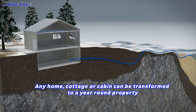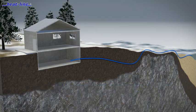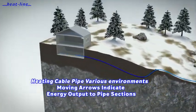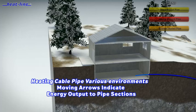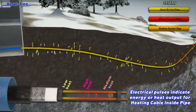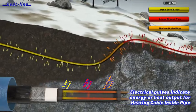It is important to understand how the heat line system works. The heating cable has the ability to vary its power output in response to temperatures at every point along the pipe. As the water pipe gets colder, the heating cable automatically increases heat output in that area.